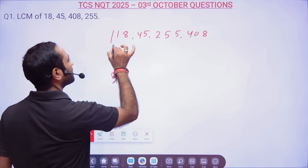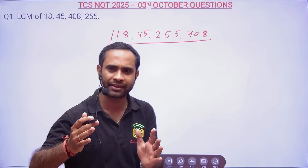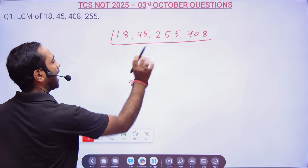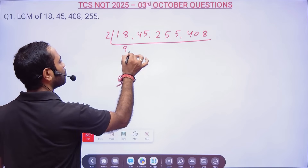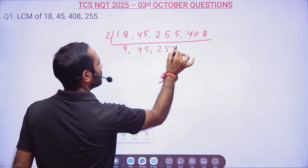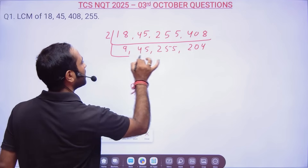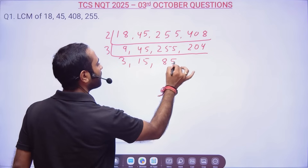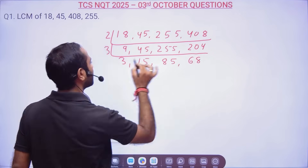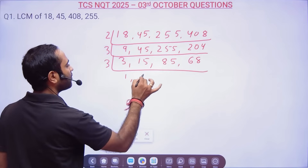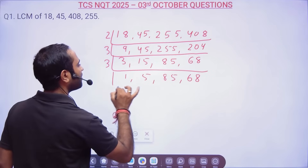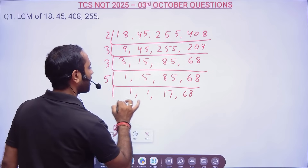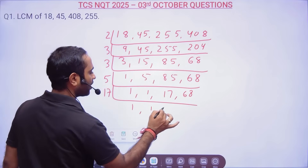There are different methods, but since you are going to write the exam, I don't want to confuse you with short tricks or different methods. Let's go with a plain and simple process. Starting with 2: 2 goes into 18 nine times, 20 times into 45 — wait, let me redo. We divide starting with 2, then 3 multiple times: 3 into 15 gives 5, 3 into 24 gives 8. Then starting with 5: 5 into 85 gives 17, and then 17. So we get factors 1, 1, 1, and 4.